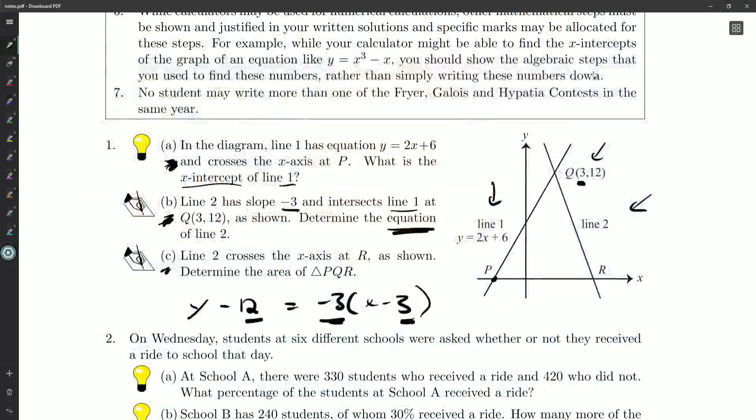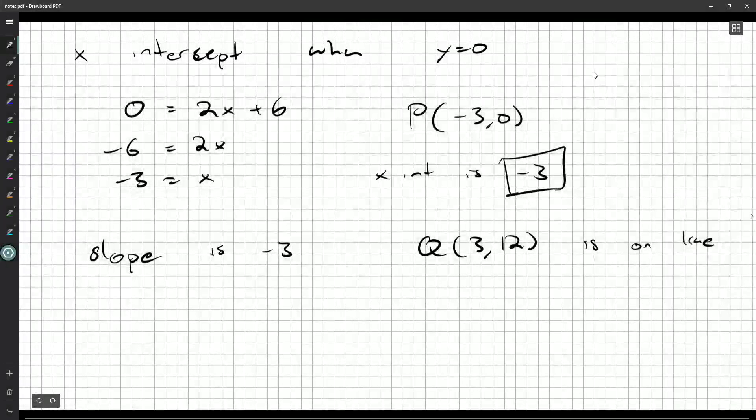We know that the slope is minus three. So we'll say y equals negative 3x plus b. But (3, 12) is on this line. So 12 is negative three times three plus b.